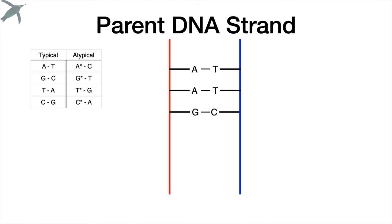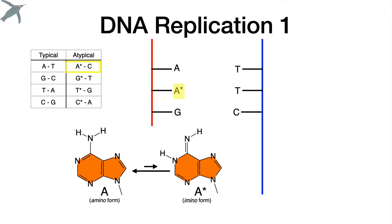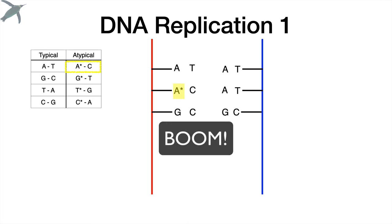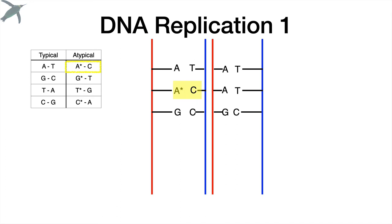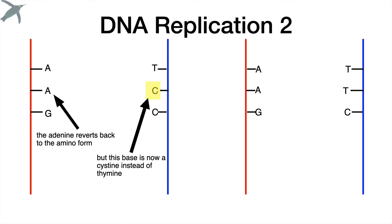We're going to look at a very simple strand that is supposed to code for the amino acid lysine. We're going to replicate it twice, have a tautomeric shift, and see what happens. In the first replication, there's some strand separation, and this adenine is going to undergo a tautomeric shift — switching to the imino form. So instead of a thymine binding to it, it's going to bind a cytosine. Here are all the other bases coming in like they're supposed to, and boom — there's that C. Once we put the backbone in, we can see the result.